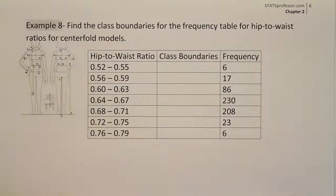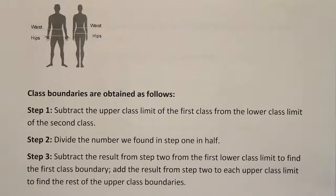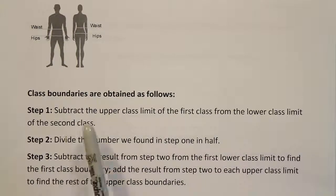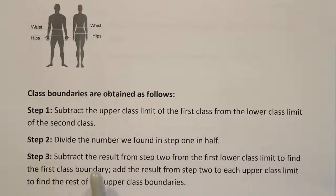Here are the steps we're going to use to find these boundaries. Step 1: subtract the upper class limit of the first class from the lower class limit of the second class. Step 2: divide the number we find in half. Step 3: subtract that number from the first lower class limit to find the first class boundary, and add the result from step 2 to each upper class limit to find the rest of the upper class boundaries.